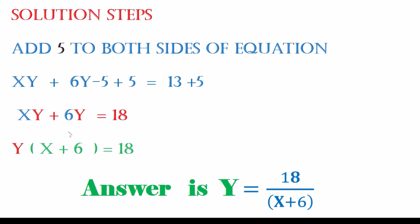So what are you going to do? You're going to divide x plus 6 to both sides of the equation. And when you divide the same numbers, on the left side it becomes 1. And then on the right side, it will equal 18 divided by x plus 6. And that's the answer for what they're asking you to do.